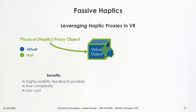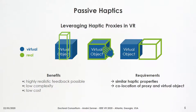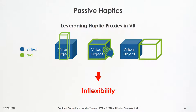However, in order to work well, passive haptic feedback has two central requirements which need to be fulfilled. First, the physical object needs to be haptically similar to the virtual object. And secondly, the physical and virtual objects need to be sufficiently co-located. These two central requirements lead to passive haptic feedback being very inflexible if implemented in a naive way, because each change in the virtual environment would trigger a change and manual adaptation of the physical space.